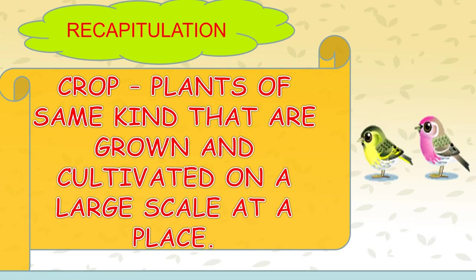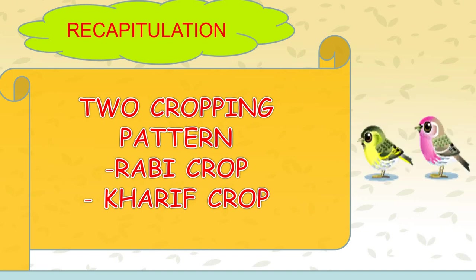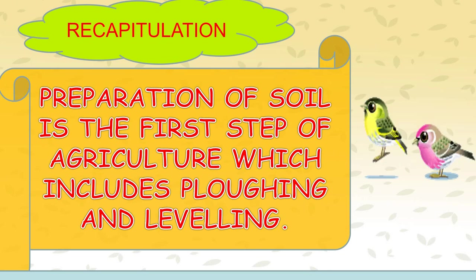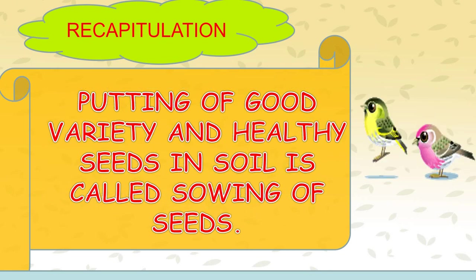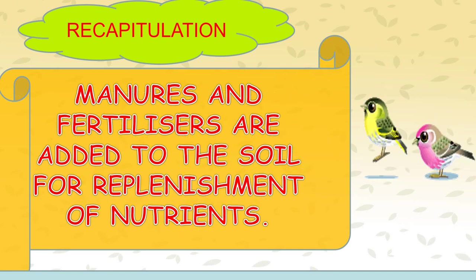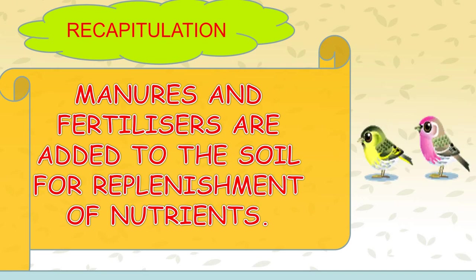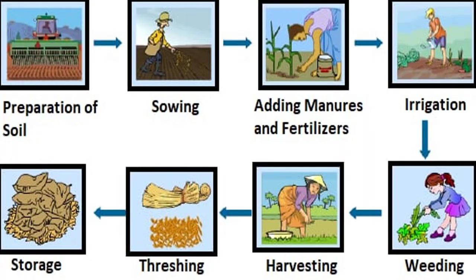Crop: Plants of the same kind that are grown and cultivated on a large scale at a place. Two cropping patterns: Rabi crop and Kharif crop. Preparation of soil is the first step of agriculture, which includes plowing and leveling. Putting good variety and healthy seeds in soil is called sowing of seeds. Manures and fertilizers are added to the soil for replenishment of nutrients. This picture shows all the agricultural practices.